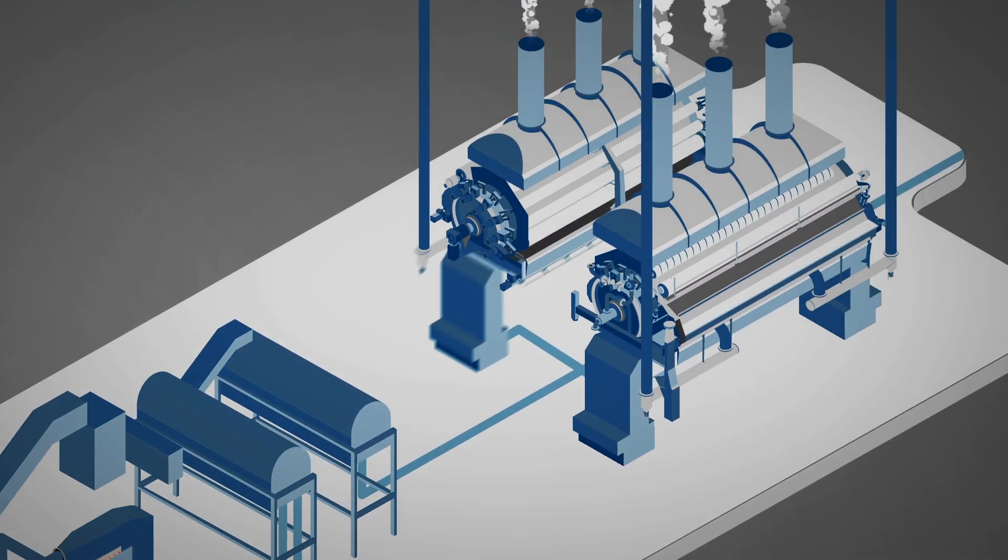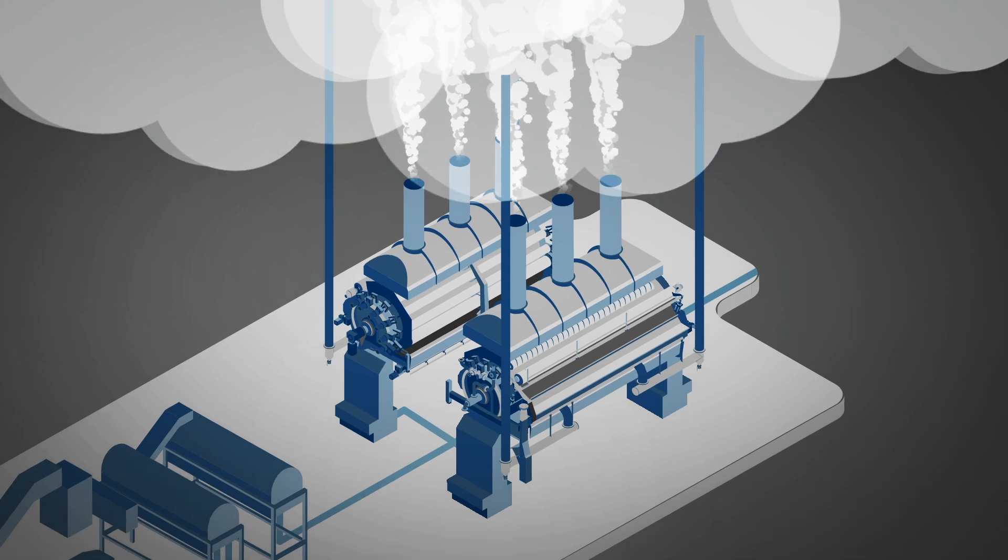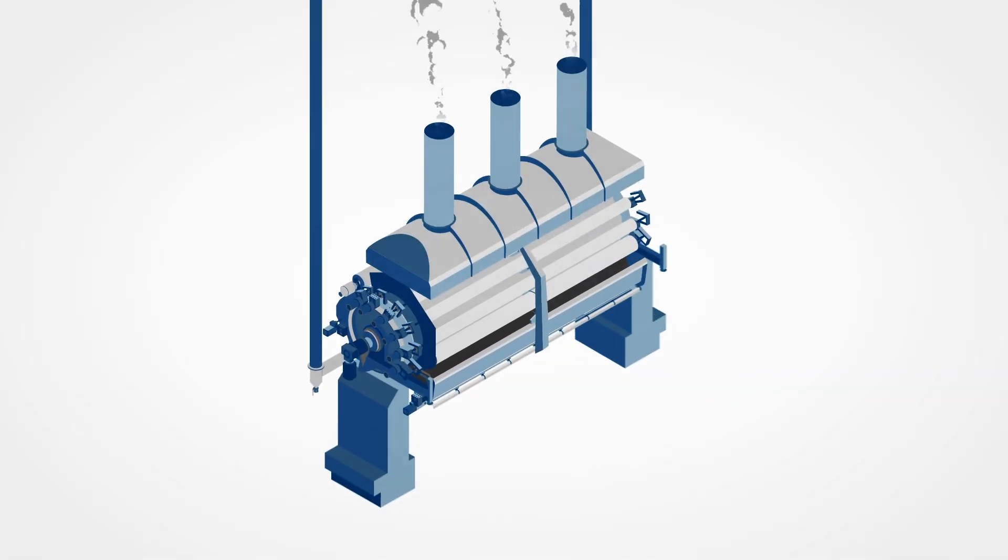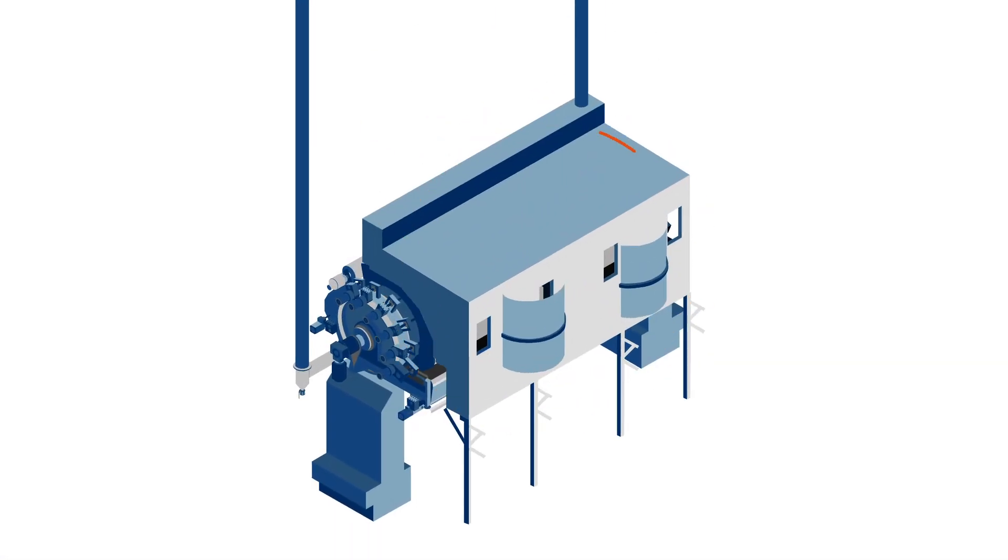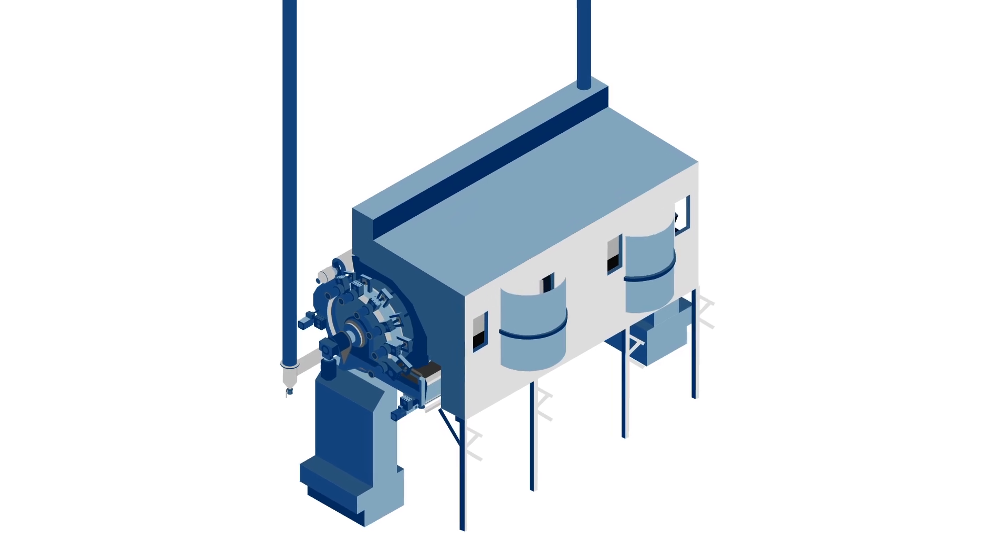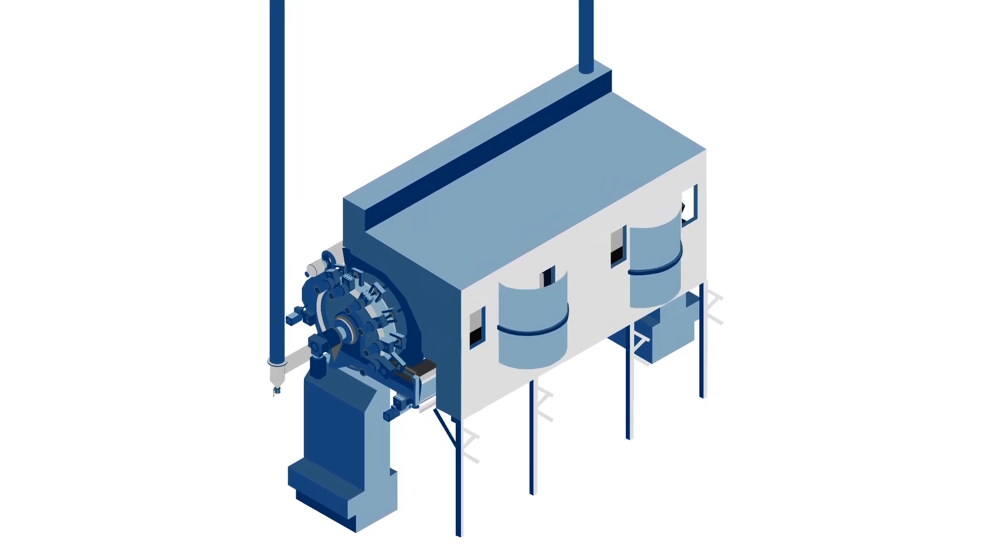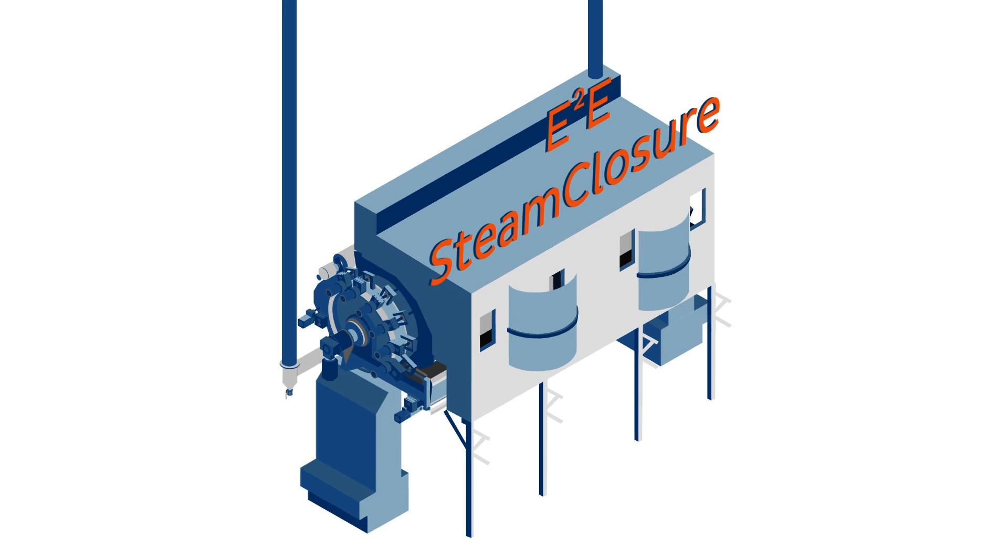Now, imagine if you could remove all emission from your flake line and turn it into energy. A new era for the drum drying process has begun. Tummer's introduces the groundbreaking E-to-E steam closure.